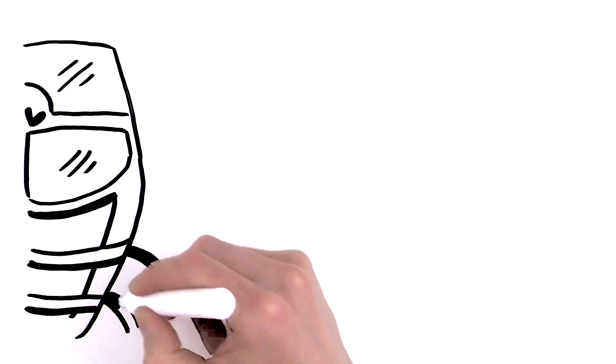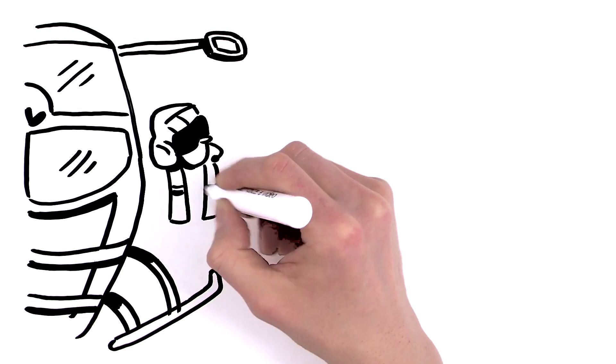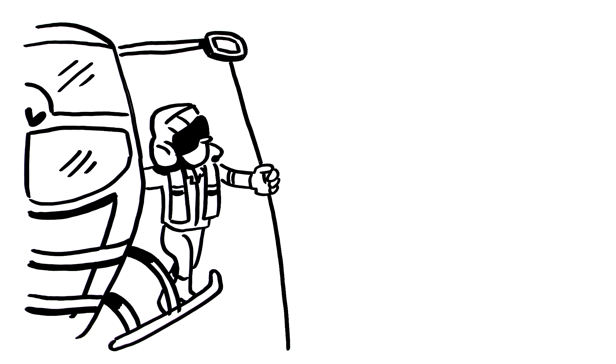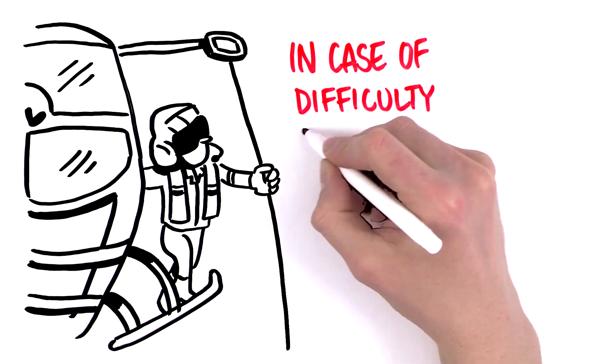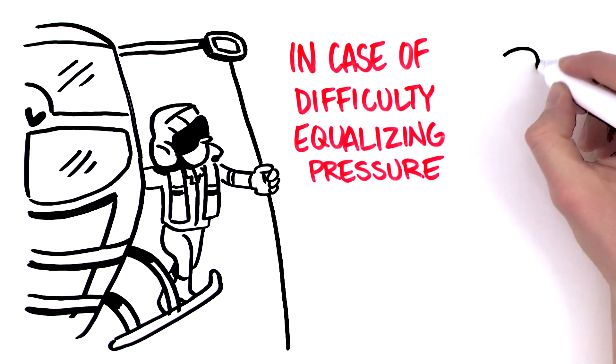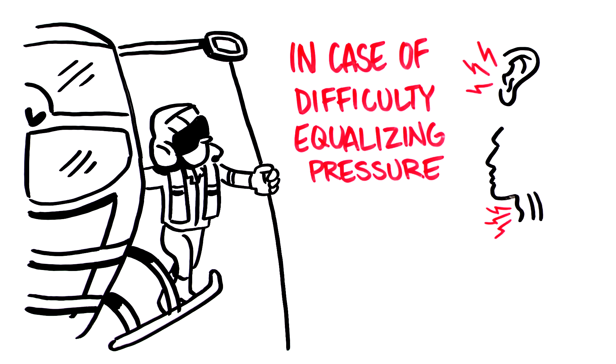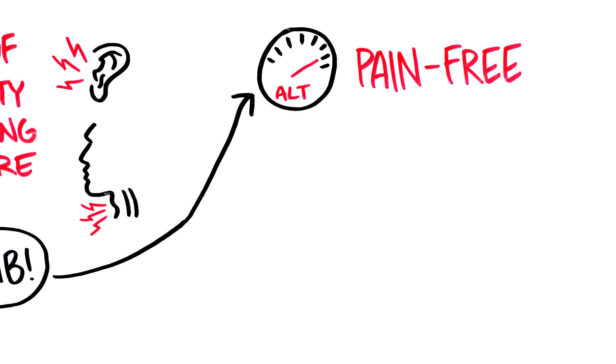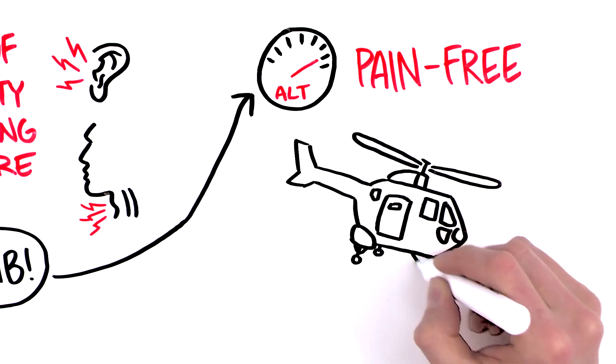2. Mitigation procedures in the air. As a pilot, loadmaster, or mission crew member, in case you or passengers have difficulties to equalize the pressure, pain in ears or throat, request a climb to a pain-free altitude. The descent can be adjusted later on.